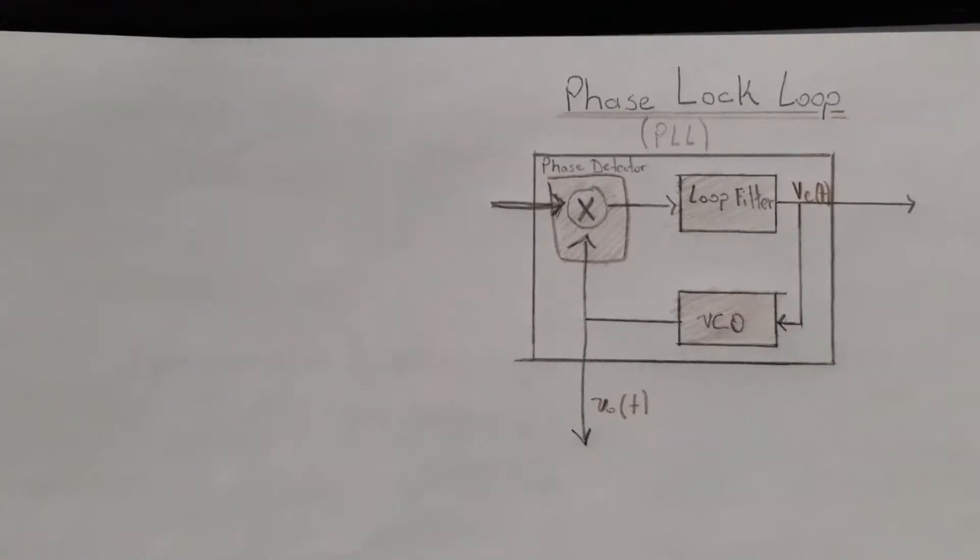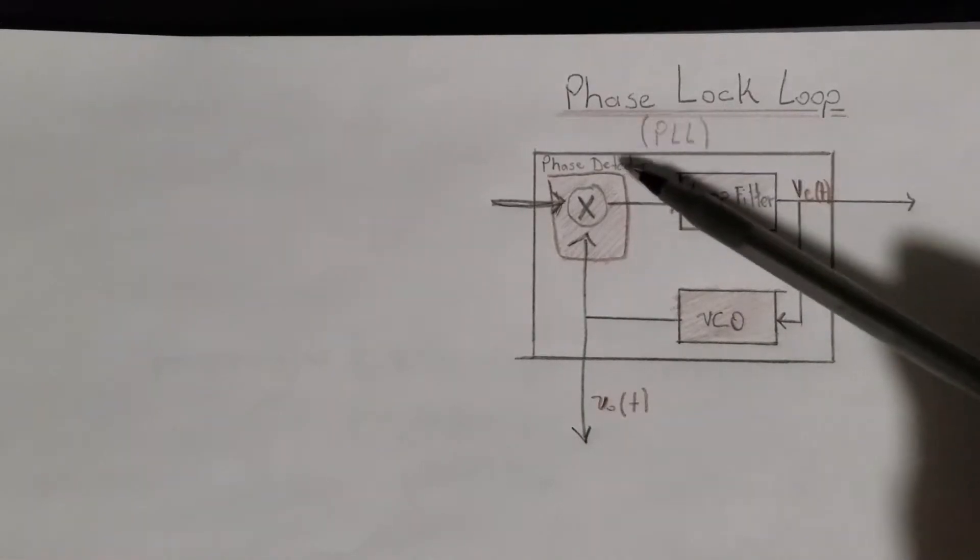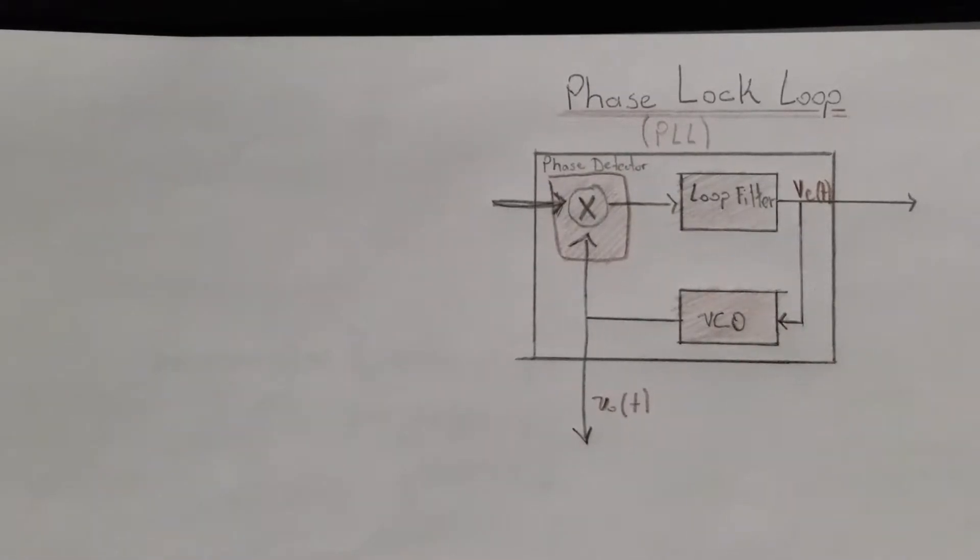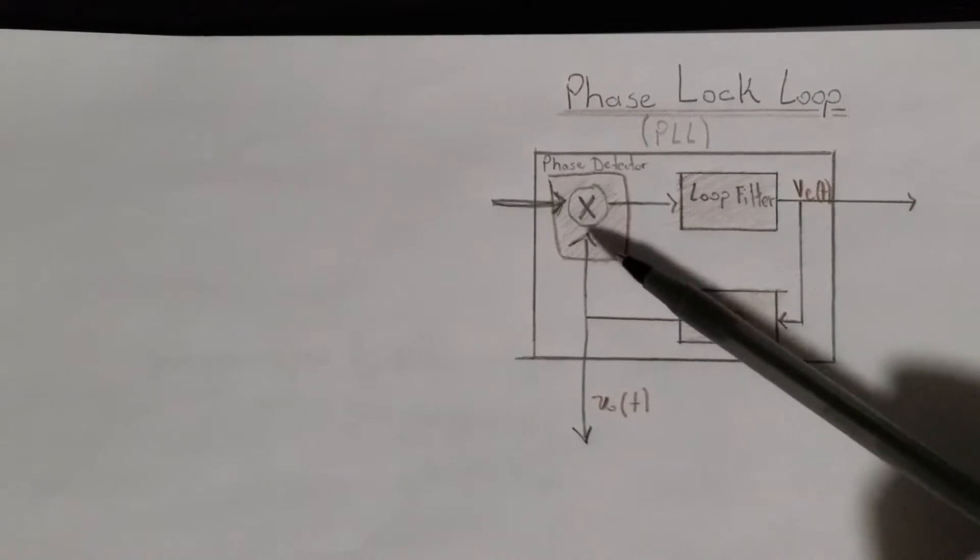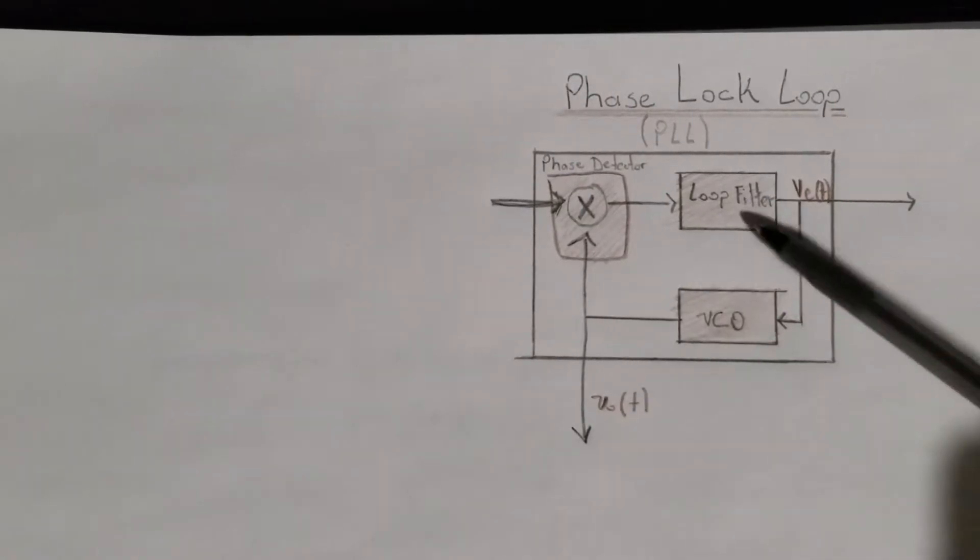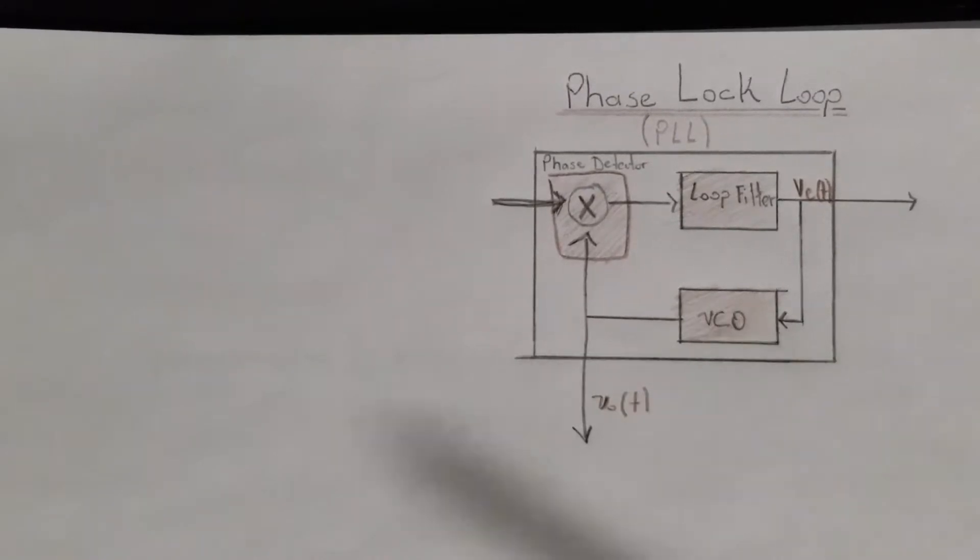Here are the components of the phase lock loop. This is the phase detector, but for our purposes let's just consider this as a simple multiplier. This is the loop filter and this is the voltage controlled oscillator.